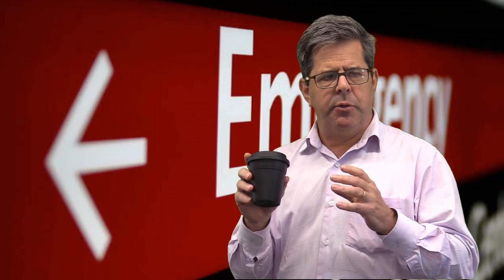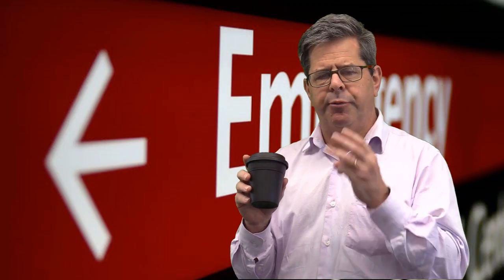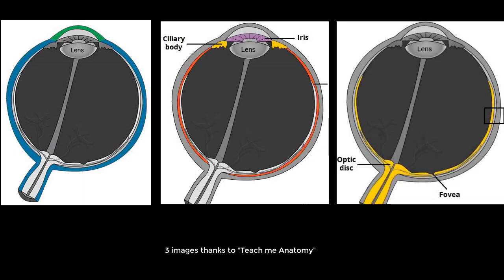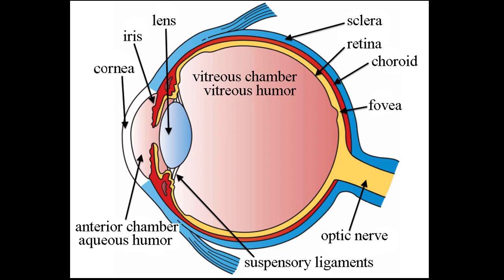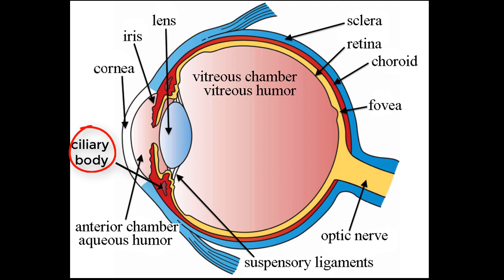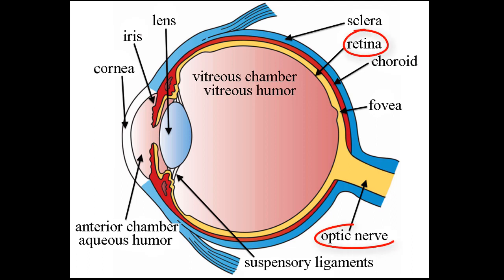Firstly, a little bit of anatomy. Think about the eyes being made up of three layers. There's the connective tissue layer, the vascular layer, and the neural layer. The outer layer is the connective tissue layer — that's the cornea, then the sclera, continuing around to the optic nerve sheath. Deep to that is the vascular layer: the ciliary body and processes, the iris, and the choroid plexus. And lastly, deep to that is the nervous layer, with the retina and the optic nerve.